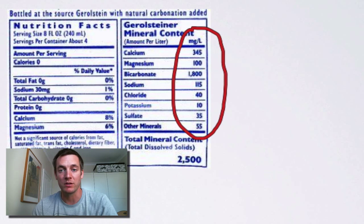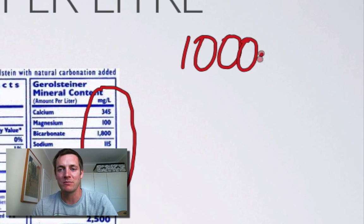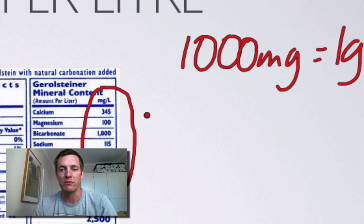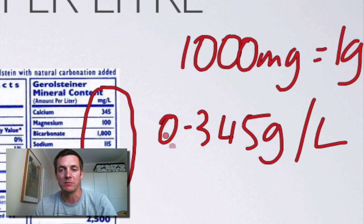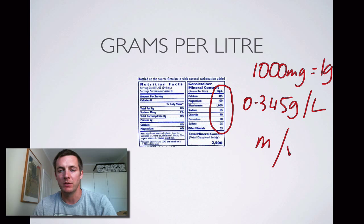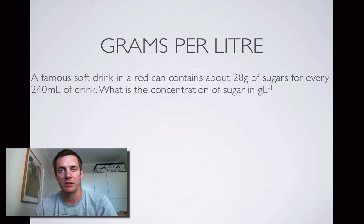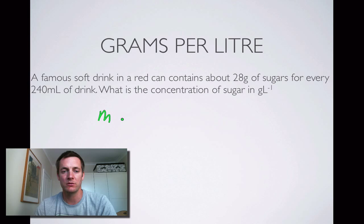Here's a very important conversion: 1000 milligrams equals one gram. So 345 milligrams per liter is 0.345 grams per liter of calcium in this mineral water. What this means is we're taking the mass and dividing it by a volume. So for these calculations, all we have to do is decide what is the mass of the solute and divide it by the volume of the solution.